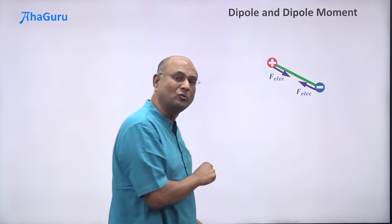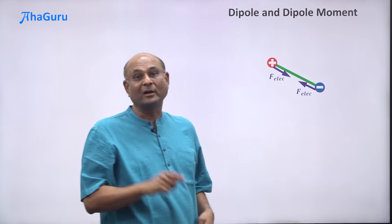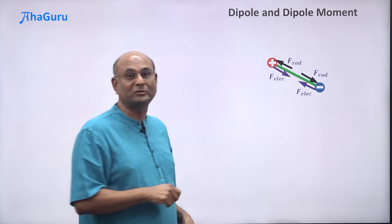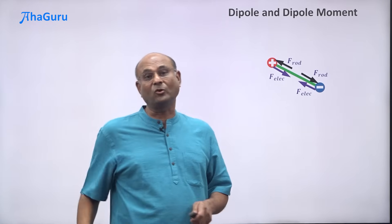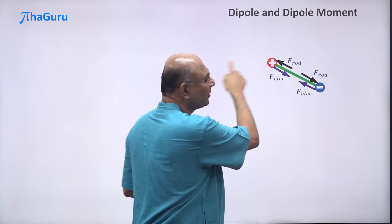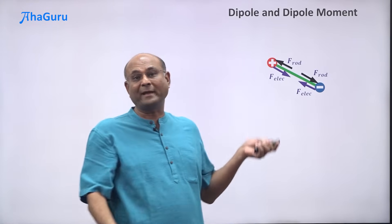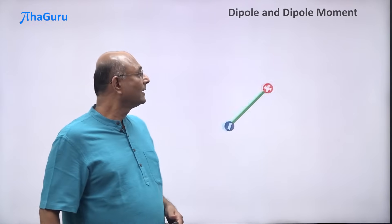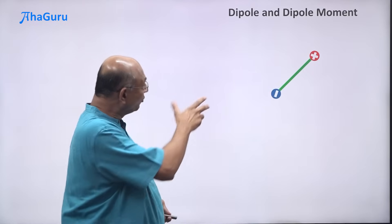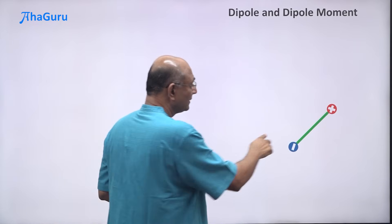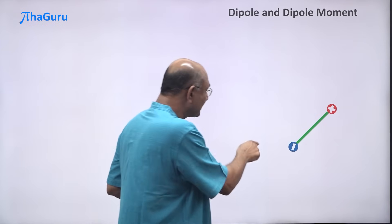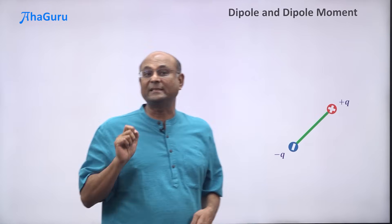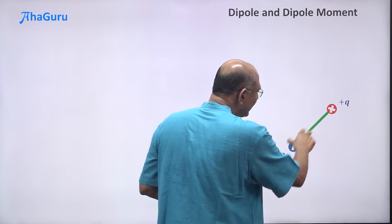The rigid rod exerts forces that prevent the two charges from coming any closer. So what can this object do? It can't come closer, it can't go away, but it can turn around and move all over the place. However, this length cannot change. So here is an object with a negative charge and a positive charge kept at a fixed distance.